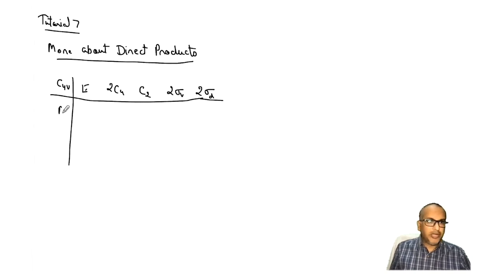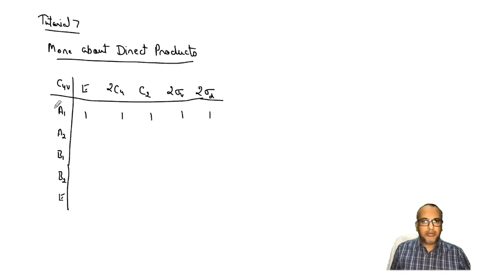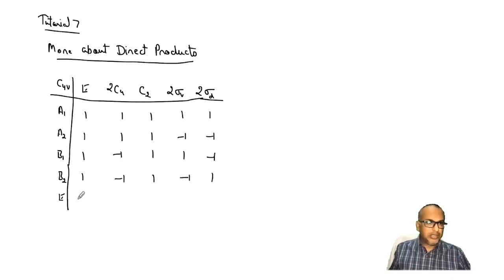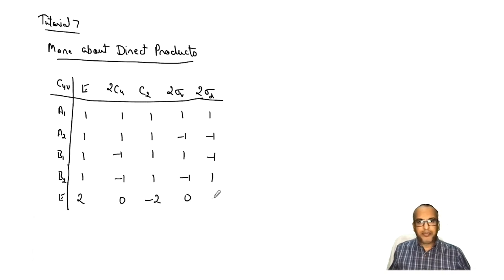The representations are A1, A2, B1, B2, and E. A1 is the totally symmetric representation — all 1s. A2 has SigmaV characters as negative. B1 has characters: 1, minus 1, 1, 1, minus 1. B2 has: 1, minus 1, 1, minus 1, 1. E is the degenerate two-dimensional representation with characters: 2, 0, minus 2, 0, 0.